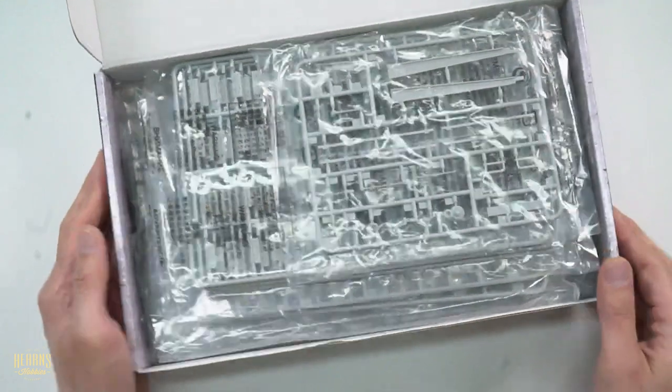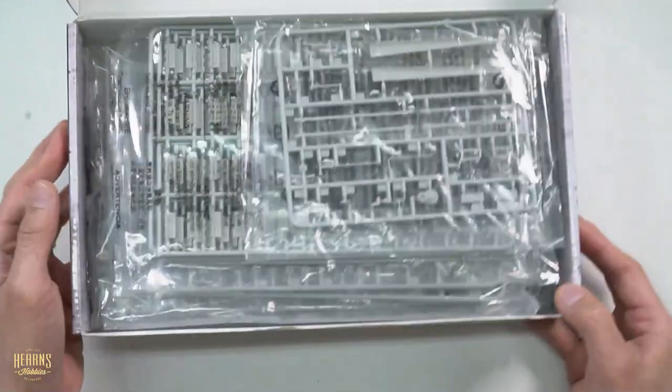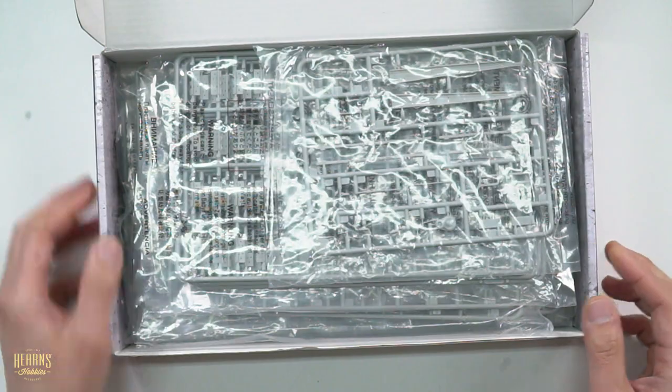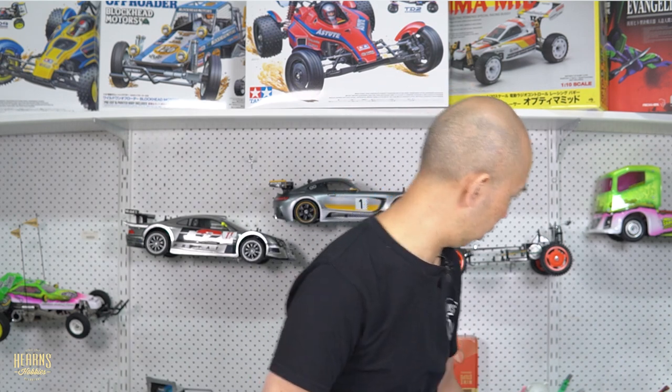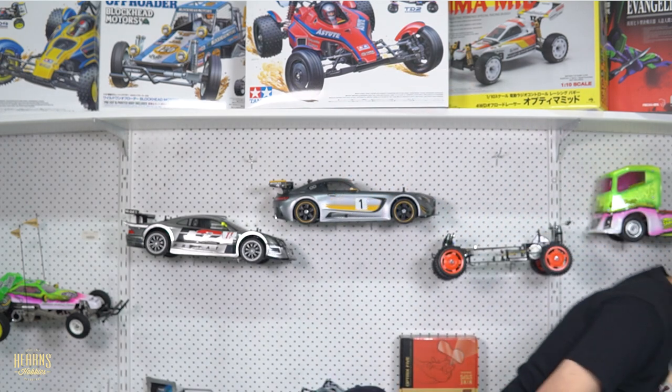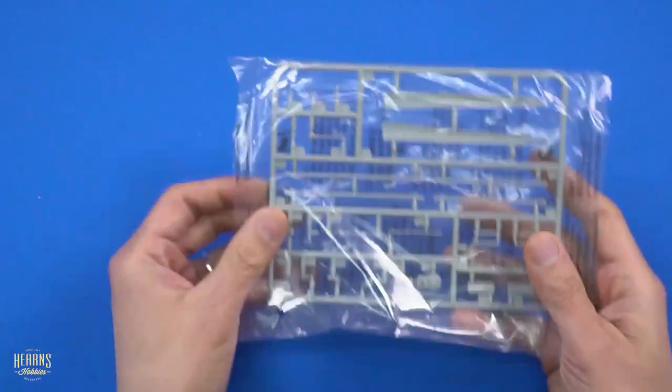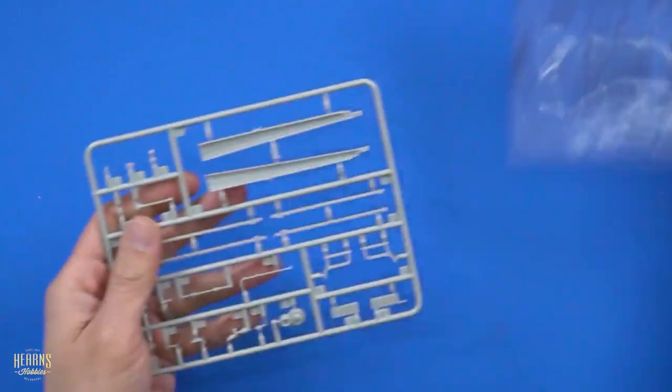Alright, so we're greeted with a very thick box full of grey plastic parts. Let's have a closer look at one at a time. Actually, I might bring up my blue mat here. This is going to make things a bit easier to see in contrast. So there's our first sprue.